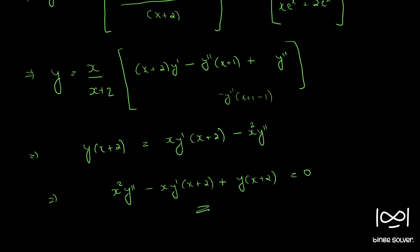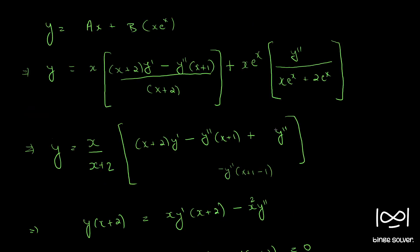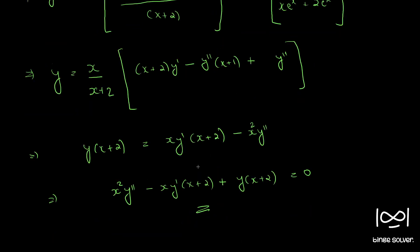This is the required differential equation. The mistake made was writing x·y double dash instead of just y double dash in an intermediate step. So be careful when writing steps. This is the required differential equation; it is of second order. We successfully eliminated both arbitrary constants.